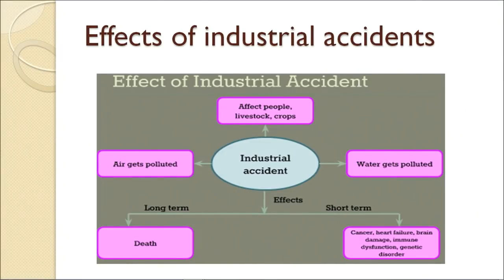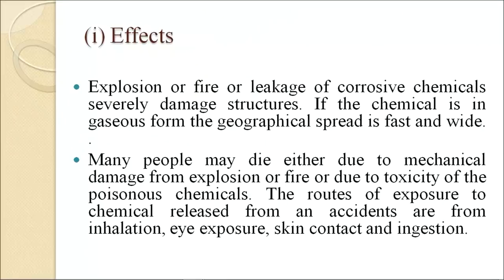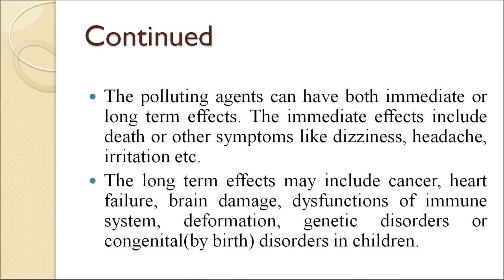The effects of industrial accidents: explosion, fire, or leakage of corrosive chemicals can severely damage structures. If a chemical is in gaseous form, the geographical spread is fast and wide. Many people may die due to mechanical damage from explosion or fire, or due to toxicity of poisonous chemicals. Routes of exposure from an accidental chemical release include inhalation, eye exposure, skin contact and ingestion. Polluting agents can have both immediate and long-term effects. Immediate effects include death or symptoms like dizziness, headache and irritation. Long-term effects may include cancer, heart failure, brain damage, dysfunction of the immune system, deformation, and genetic or congenital disorders in children.